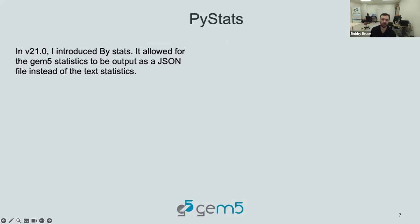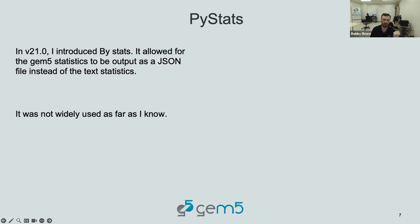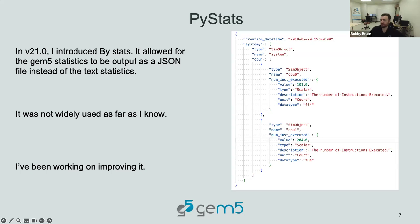I'm going to talk about what I call PyStats. The PyStats is something I worked on two or three years ago. My thought process was: isn't getting the stats you need in GEM5 horrible? It seems like everyone dumps the stats to a text file and opens it and does Control-F to find what they want. So I thought, how about we at least output it as a JSON file — what the text stats representation is, just made into a JSON format.